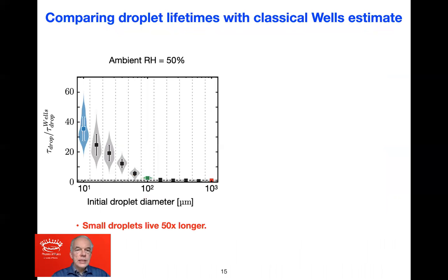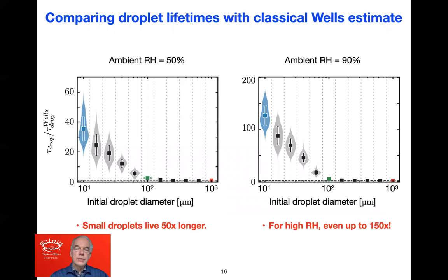When we look at the numbers, how strong is this evaporation delay? Comparing the droplet lifetime to the Wells droplet lifetime, we see that small droplets at moderate relative humidity are delayed by a factor of nearly 40. They live much, much longer. When you go to a relative humidity of 90%, the delay in lifetime is in fact up to 150 times larger compared to the Wells solution.